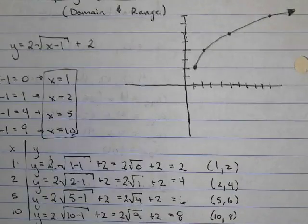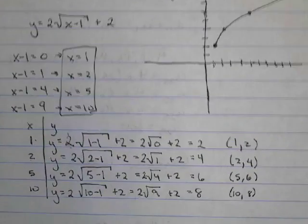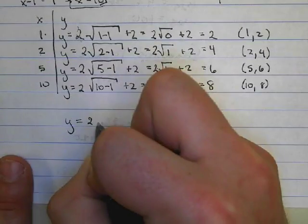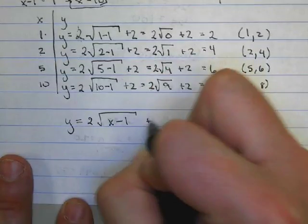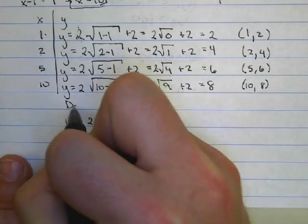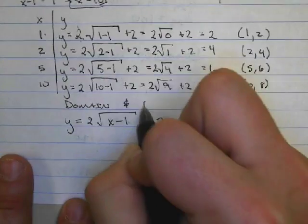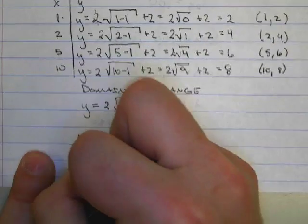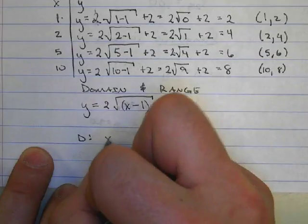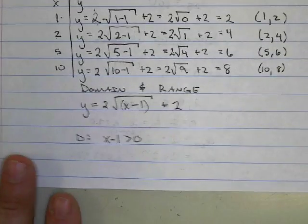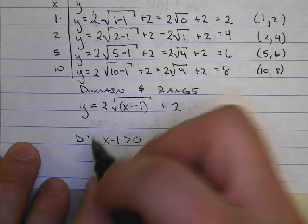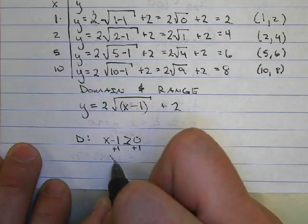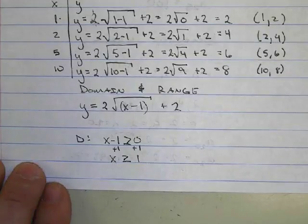Now to find the domain and range, it's much easier than that. We're still looking at y equals 2 times the square root of x minus 1 plus 2. To find the domain, we set the radicand x minus 1 greater than or equal to 0, because we always need non-negative numbers under a radical. Adding 1 to both sides gives x is greater than or equal to 1. That's our domain.